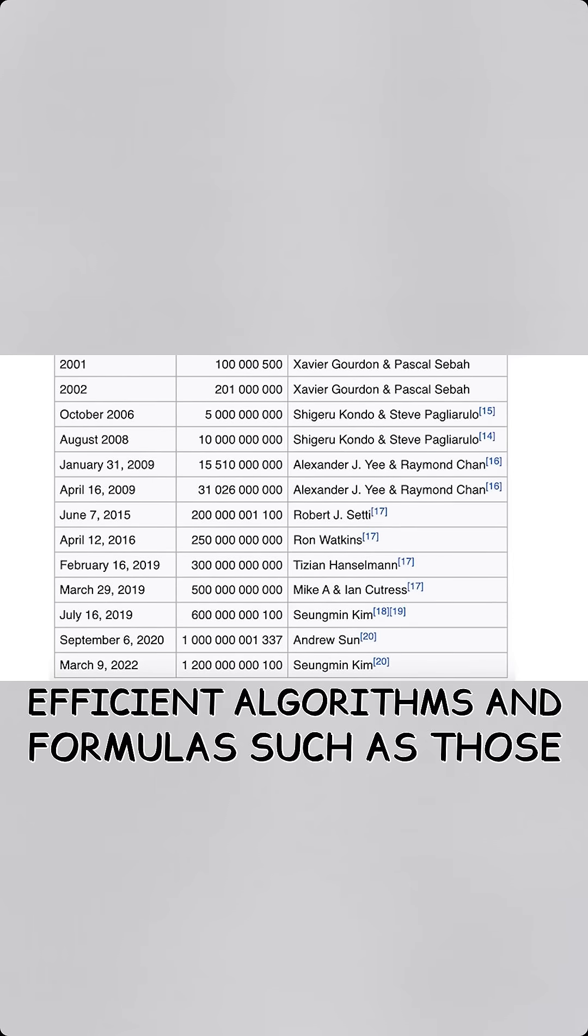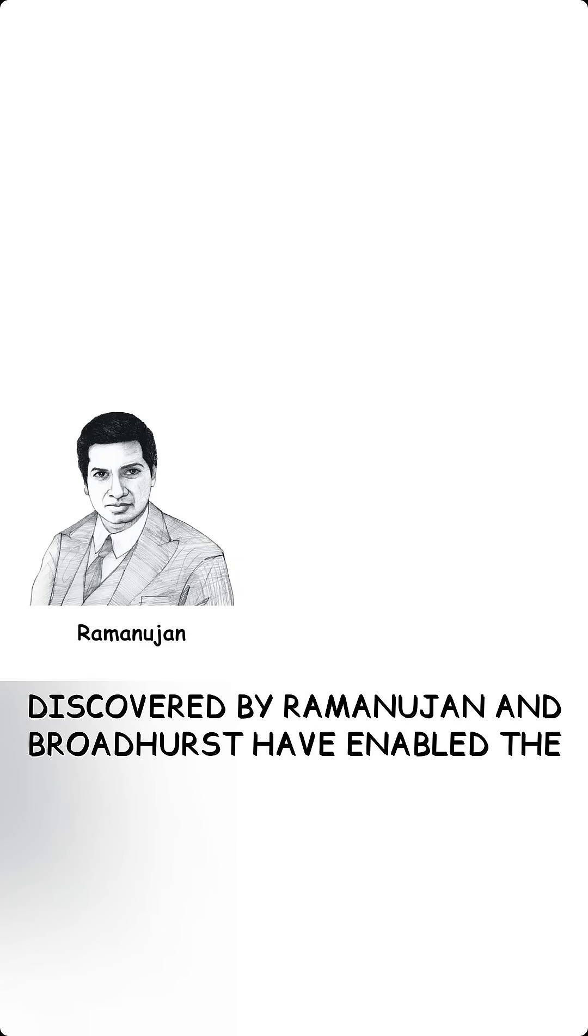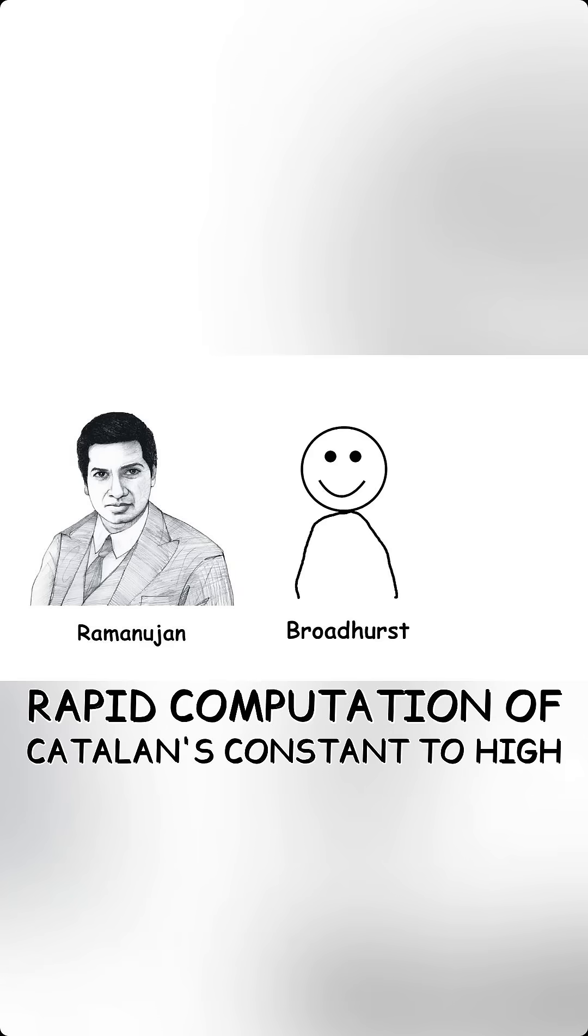Efficient algorithms and formulas such as those discovered by Ramanujan and Broadhurst have enabled the rapid computation of Catalan's constant to high precision.